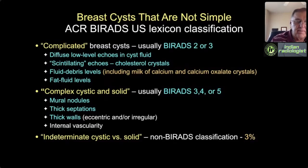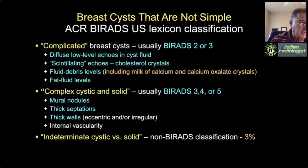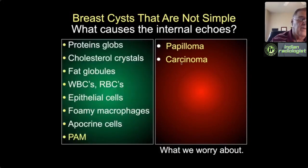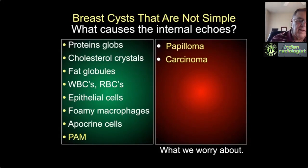BI-RADS doesn't mention that a small percentage of cysts are mistaken for solid—usually cysts with echogenic fluid so echogenic that a complicated cyst simulates a fibroadenoma. Why do we worry about cysts? Because echoes inside non-simple cysts could be caused by papillary carcinoma. But what is it usually? Protein globs, cholesterol crystals, fat globules, white blood cells, red blood cells, epithelial cells, foamy macrophages, individual apocrine metaplastic cells, or papillary apocrine metaplastic cells—this is what it is in the vast majority of cases.